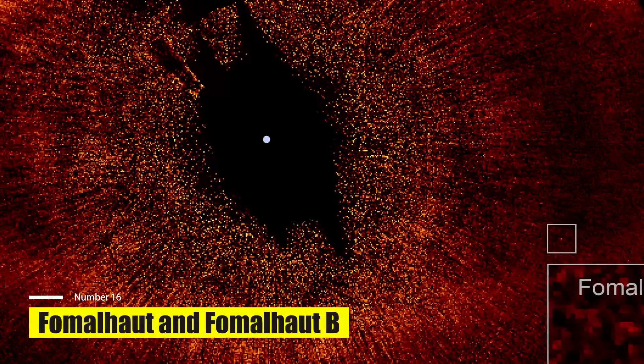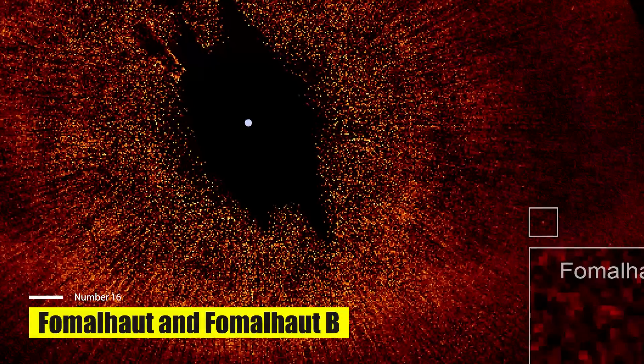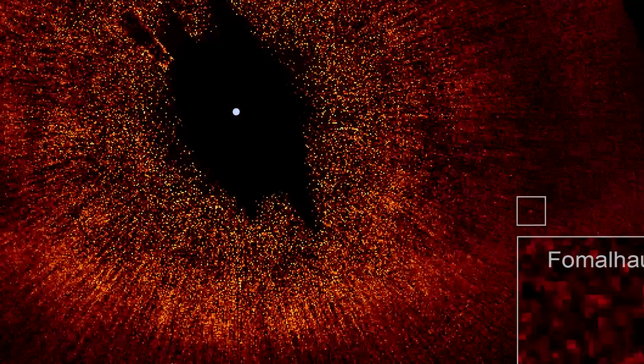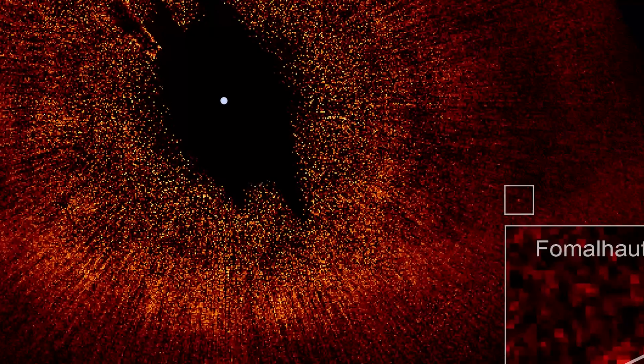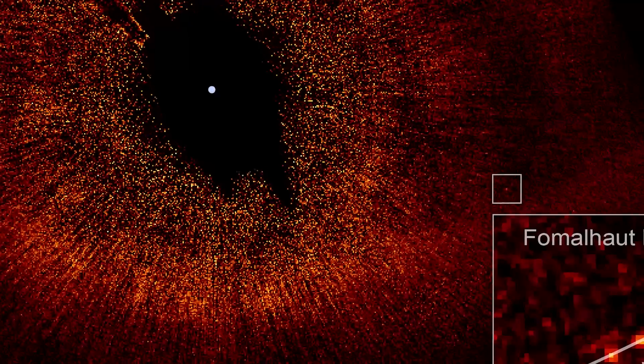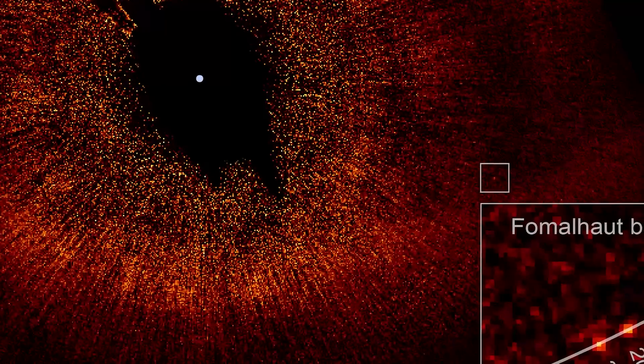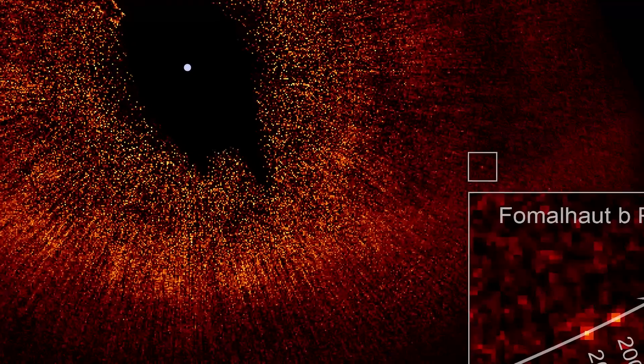Fomalhaut and Fomalhaut b. Fomalhaut b, the newly discovered planet, is shown orbiting its parent star in this image from the advanced camera on board the James Webb Space Telescope. The small white box at the lower right pinpoints the planet's location.